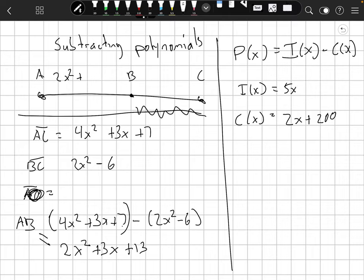So AB would have to equal 2x squared plus 3x plus 13. I'm just going to write it right here. 2x squared plus 3x plus 13. And BC is 2x squared minus 6. And if we added AB and BC up, we'd be right back to AC. So let's see if it works. 4x squared plus 3x plus 7. It does.